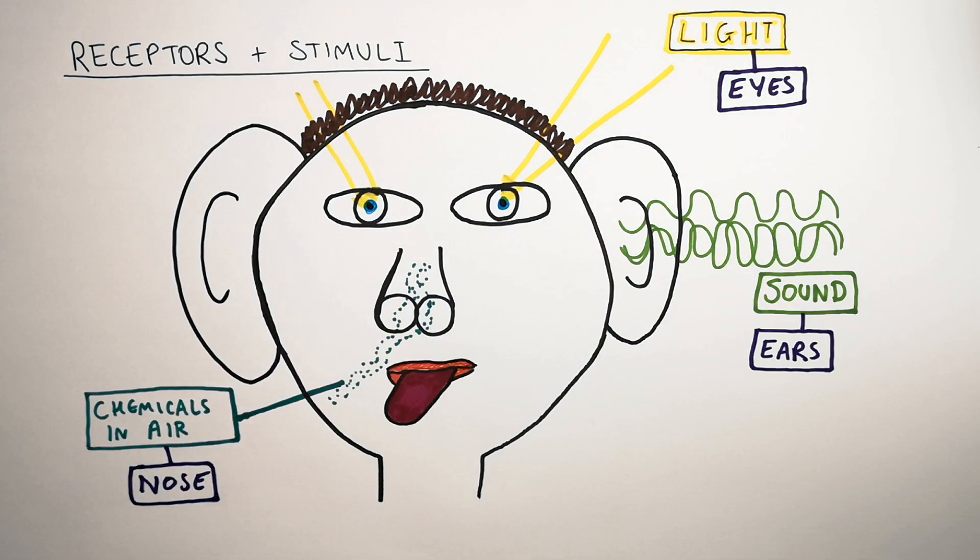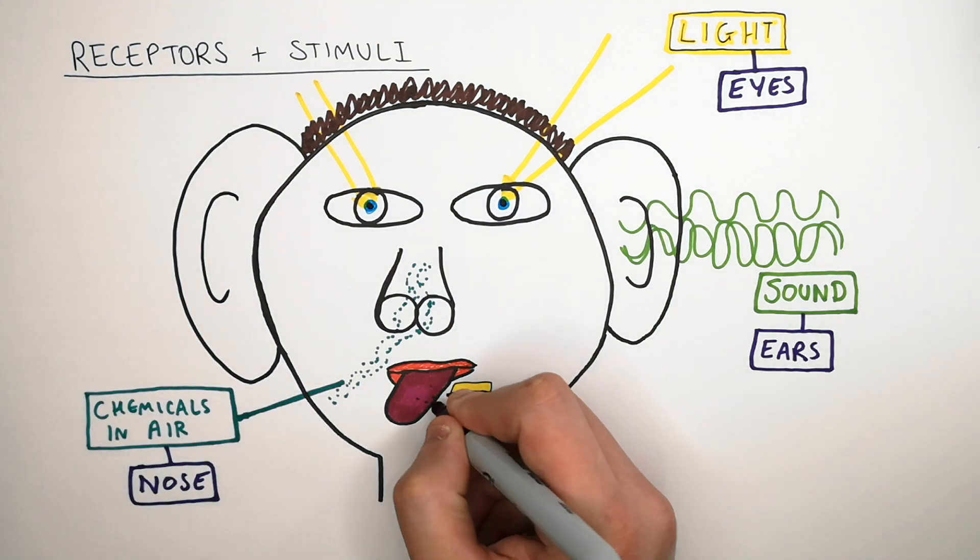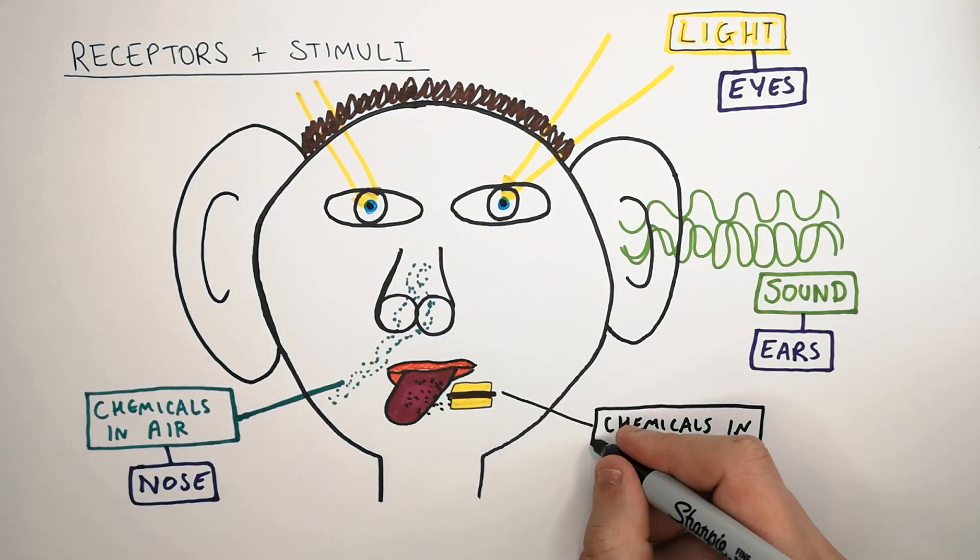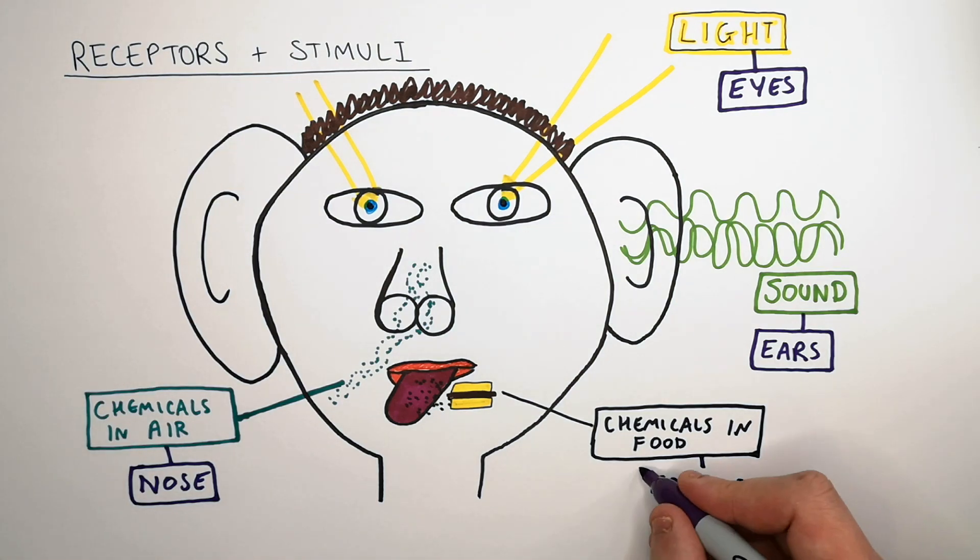Your tongue is another receptor. You've got receptor cells in your tongue. Your tongue detects chemicals in the food. So if you eat a sandwich, for example, the chemicals in the food are the stimulus and the receptor cells in your tongue are the receptor.